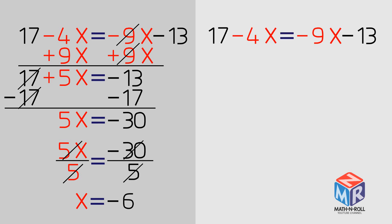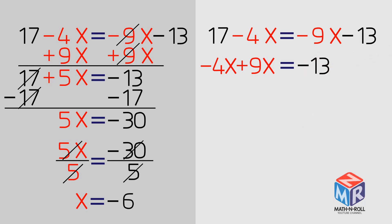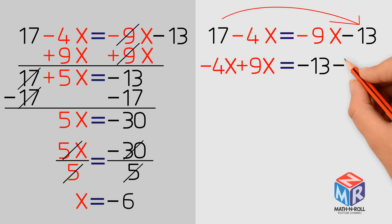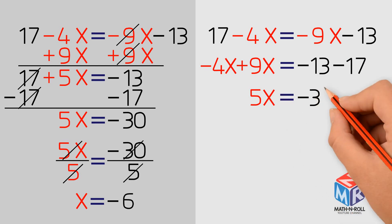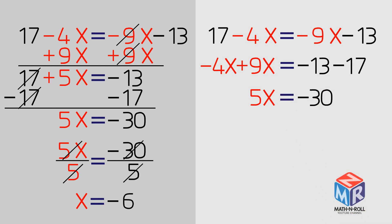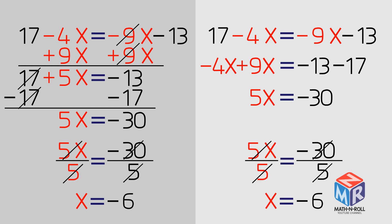Let's solve the same equation using elements from the transposing method. Our goal is to get the variables on one side of the equation. So we move negative 9x to the left side, but we move it with a positive sign. Next, we carry 17 over the equal sign with the minus sign. We combine the terms and we are left with 5x equals negative 30. Now we divide both sides by 5, like usual. We are left with x equals negative 6.